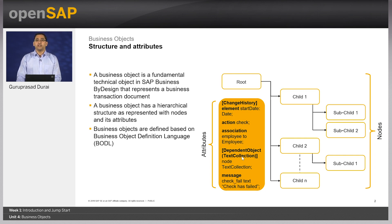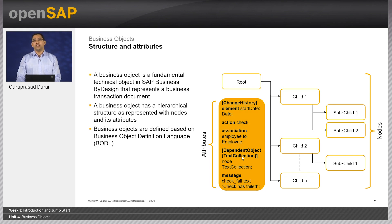The list of available data types can be viewed in the repository explorer. Number two: the actions. The actions defined in the business objects are mapped to the user interface. The user uses these actions to change the status of a business document or to perform any checks on the business document.